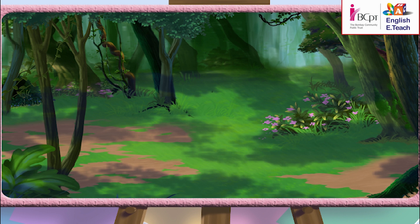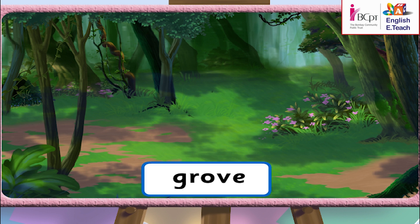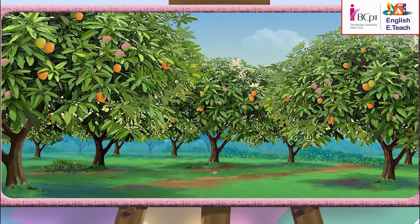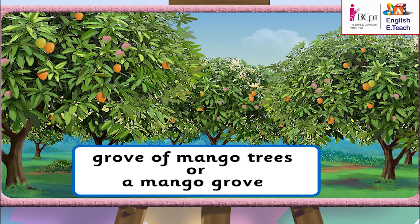When there are a lot of trees in a place, what is it called? Teacher, is this called a grove? Yes, Ahmad, it is also called a wood or a small forest. In Marathi, a grove is called a 'Rai.' So, where there are lots of mango trees, we call the place a grove of mango trees, or a mango grove.